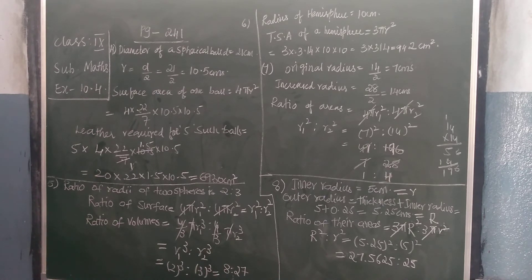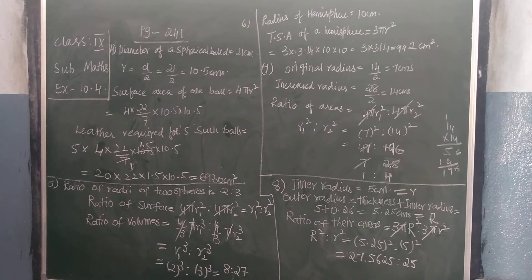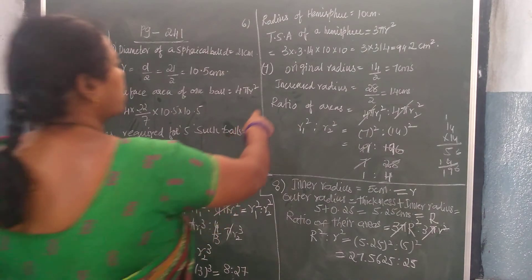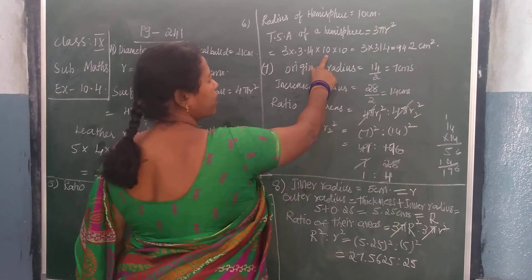Next, see children, 6th problem. What did they give? To find out the total surface area of a hemisphere. You should know the formula: total surface area of a hemisphere is equal to 3 pi r square. They have given you the radius of a hemisphere is equal to 10 cm. Total surface area of a hemisphere is 3 pi r square. So 3 into 22/7 into 10 into 10.